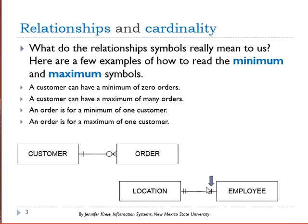In the relationship between location and employee — where this might be an office assignment — location to employee says any one location, such as office B on the third floor, would be for a minimum of one employee and a maximum of one employee. Any one employee, Jim Ortega for example, could be assigned to a minimum of one location and a maximum of one office.